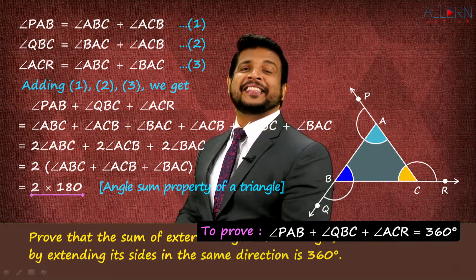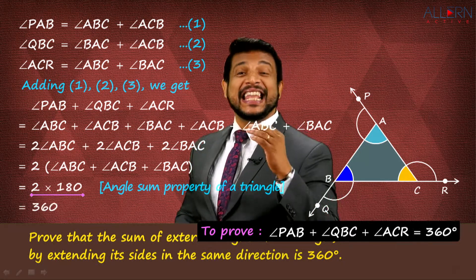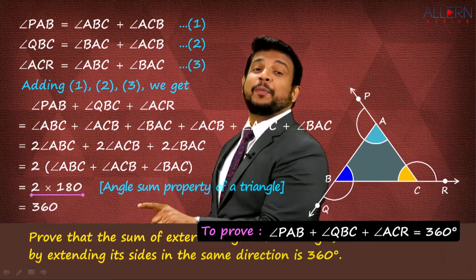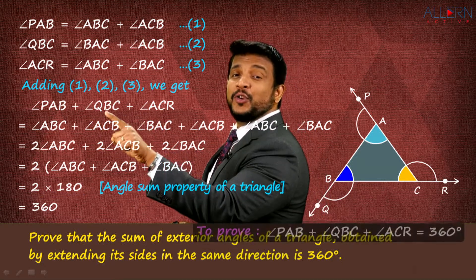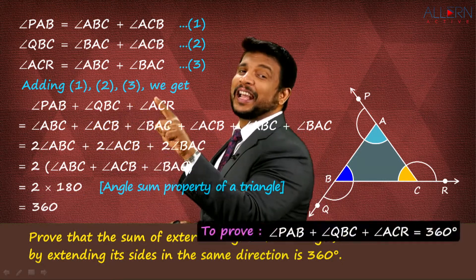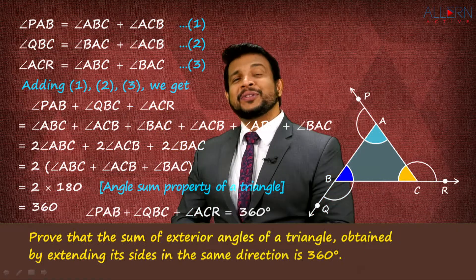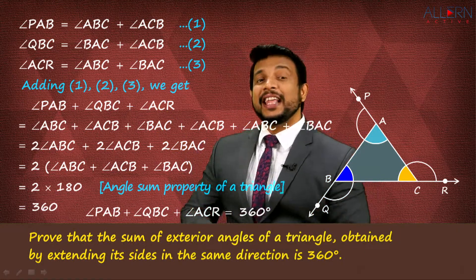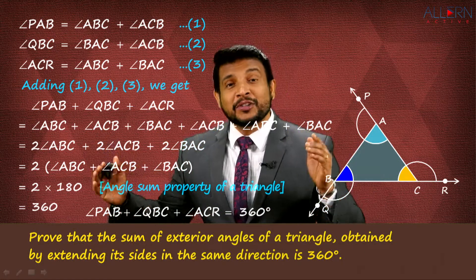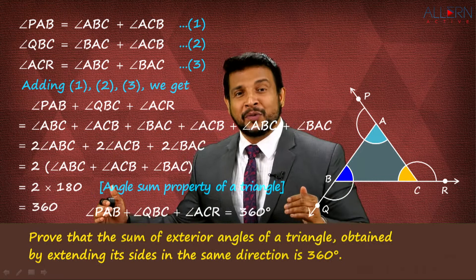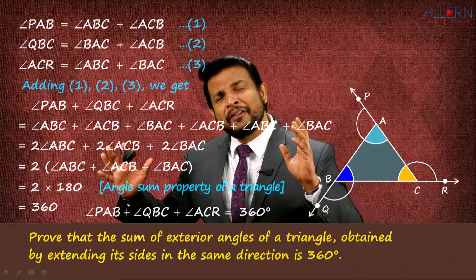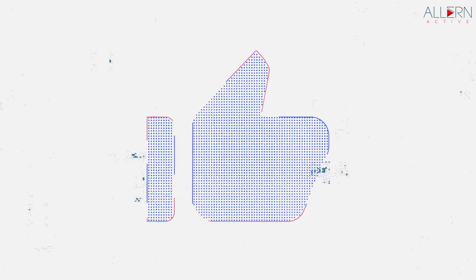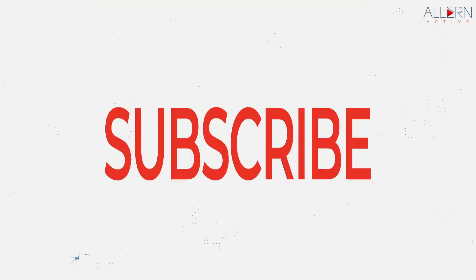Twice of 180 is 360 degrees. That means we have proved: angle PAB + angle QBC + angle ACR = 360°. And we got the proof — it's a very beautiful one!